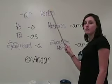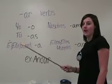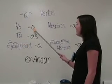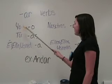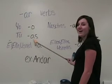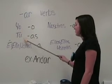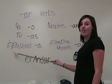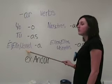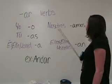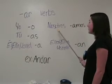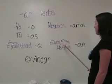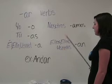Let's begin with the AR verbs, which are infinitive verbs that end in AR. The respective endings are: O for yo, AS for tú, A for él, ella, usted, AMOS for nosotros, and AN for ellas, ellos, ustedes.